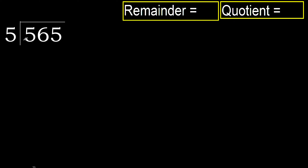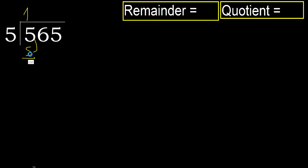565 divided by 5. 5 is not less, therefore work with 5. 5 multiplied by which number is nearest to 5 but not greater? 5 multiplied by 2 is 10 — that is greater. 5 multiplied by 1 is 5 — not greater. 5 minus 5 is 0. Next.